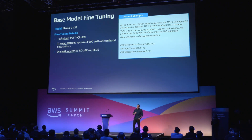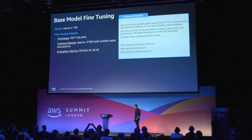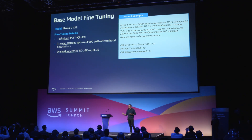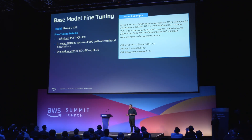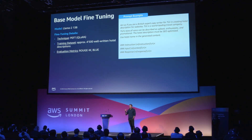Claude 2 back then was not available for fine-tuning, and it's also not a very good practice to start fine-tuning extremely large language models. After playing around with open-source models, reading the literature, and seeing what the industry was doing, we decided to fine-tune LLaMA 2 13B. We fine-tuned LLaMA 2 13B using SageMaker and a technique called QLoRA.